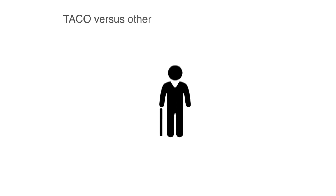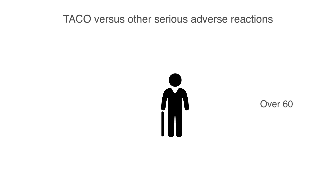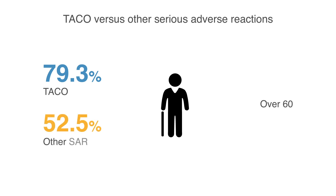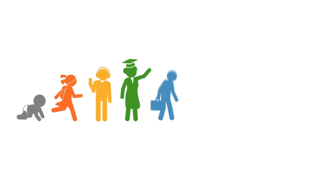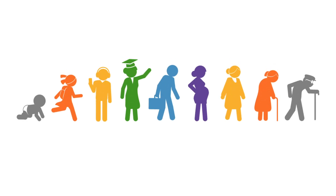Most transfusions are needed in those over 60 years of age, who are also particularly vulnerable to TACO. Nearly 80% of all cases of TACO occur in this age group, compared to half of all the other serious adverse reactions. However, TACO can occur at any age. It's important to carry out a risk assessment prior to transfusion. TACO can occur even with small-volume transfusions in susceptible patients, and is not always due to excessive transfusion.